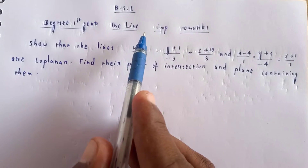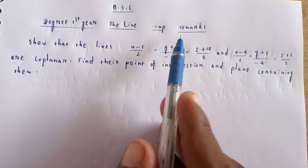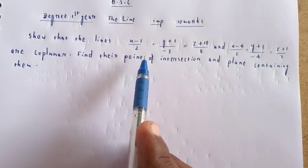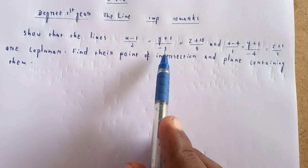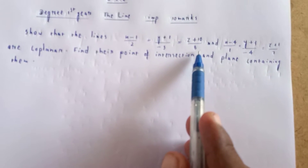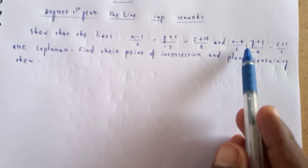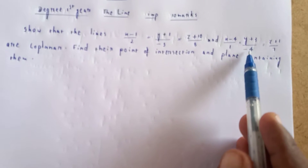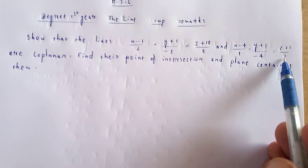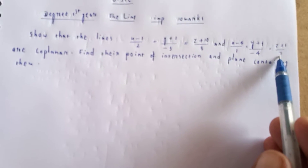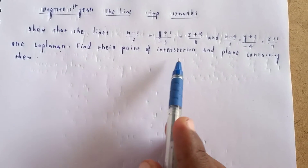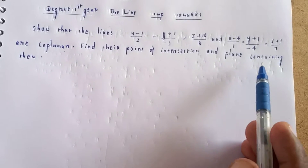Welcome to my channel. This is a BSC important 10-marks problem. Show that the lines are coplanar and find the point of intersection and the plane containing them. Line 1: (x−1)/2 = (y+1)/(−3) = (z+10)/8. Line 2: (x−4)/1 = (y+3)/(−4) = (z+1)/7.